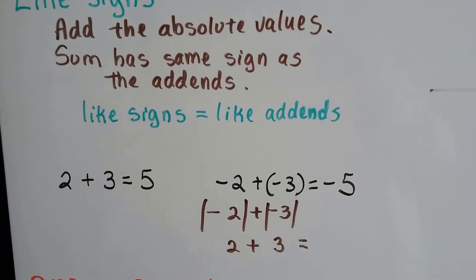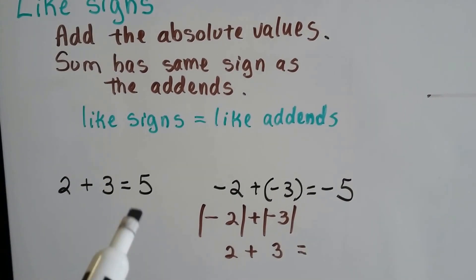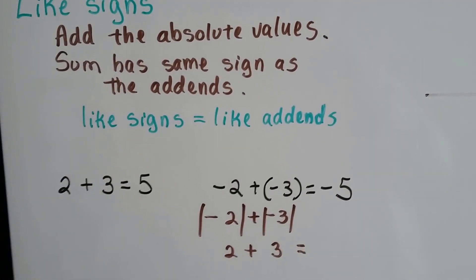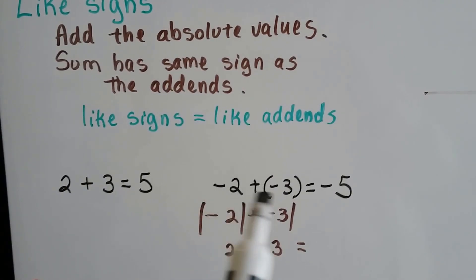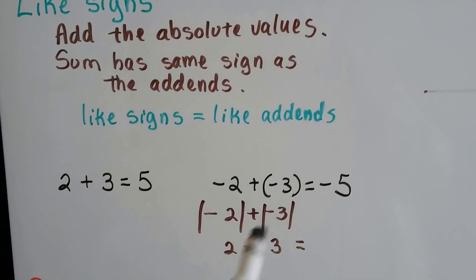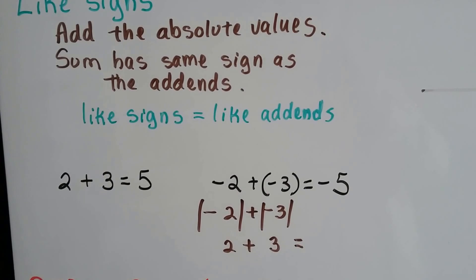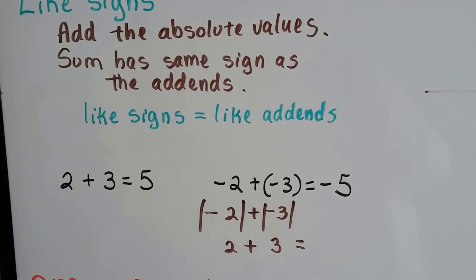If we have a positive 2 and a positive 3, our sum is going to be positive. And if we have negatives that we're adding together, we take the sign of the absolute values — 2 and 3 — and we take these like signs and that's the sign of the sum. It's just like the addends.